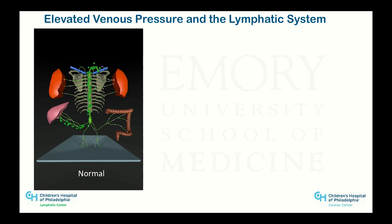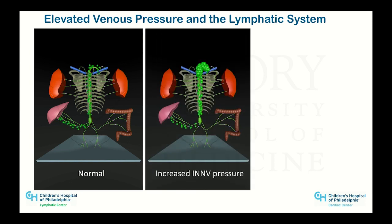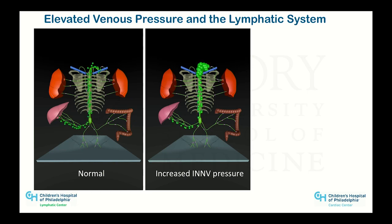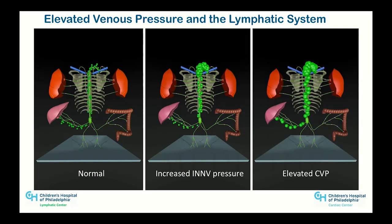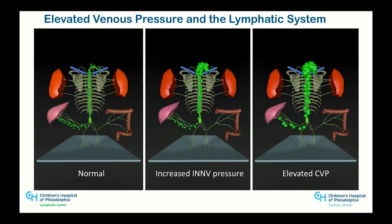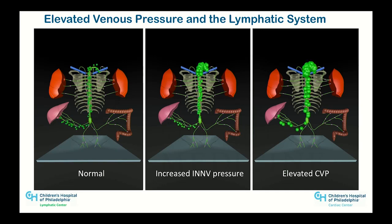We start to see lymphatic congestion even in babies who have higher afterload. But when we make them into a Fontan — equivalent to your heart failure patients — you've significantly kicked lymph production in the liver and added bad afterload. This is a double hit on the system that ultimately leads to fluids starting to accumulate inside the tissue.